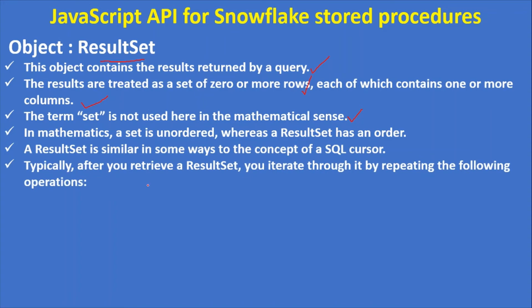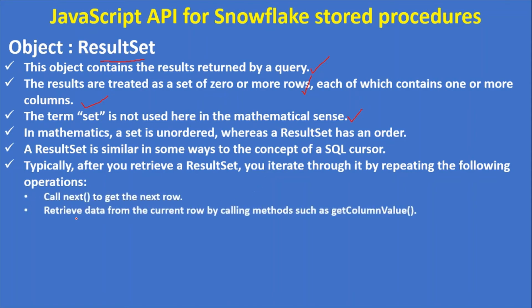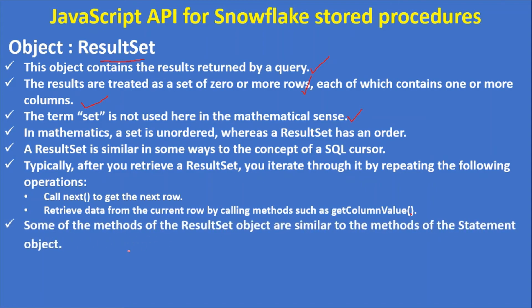Typically after you retrieve a ResultSet, you iterate through it by repeating the following operations: call next(), which is a method to get the next row, and then retrieve data from the current row by calling methods such as getColumnValue(). You pass either the column name or position, with the index starting at one. Some methods of ResultSet objects are similar to the methods of Statement objects.